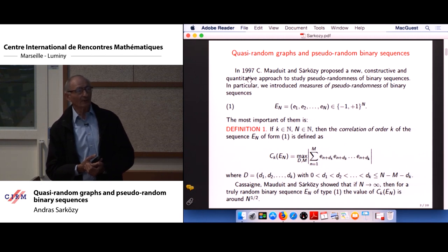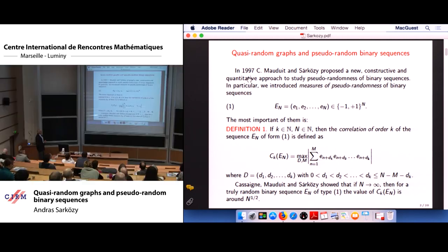We introduced some measures to measure the pseudo-randomness of such sequences. The most important of these measures is the so-called correlation of order k, which is defined for a sequence of the type one as the maximum of the absolute values of the sums that you see there in the sum, where the condition under these, it just means that all the subscripts of these in the sum should belong to the interval one and all the EIs have subscripts between one and n.